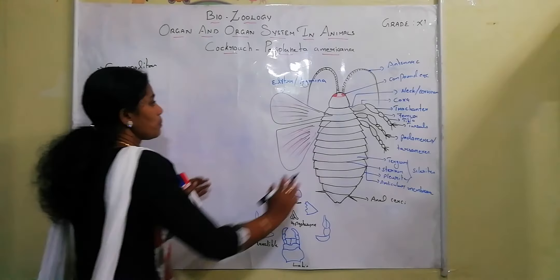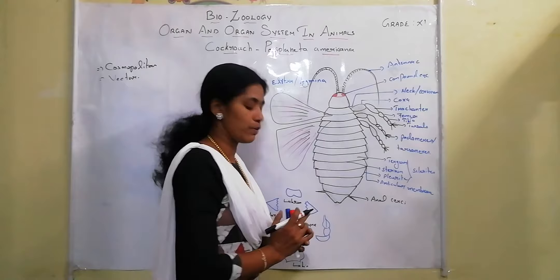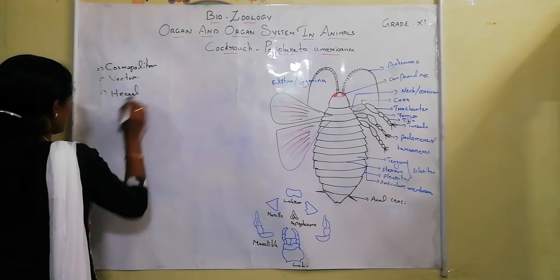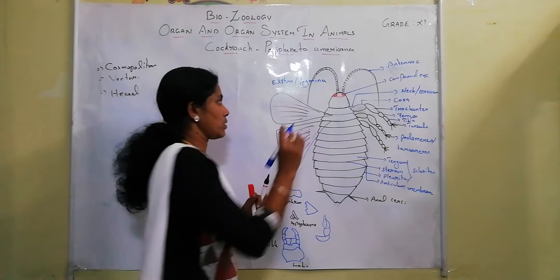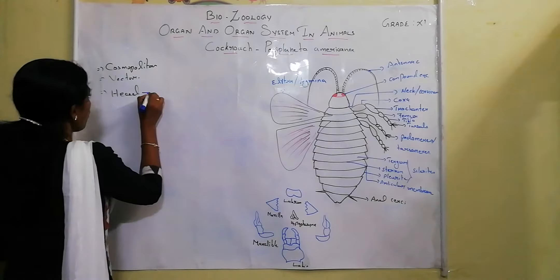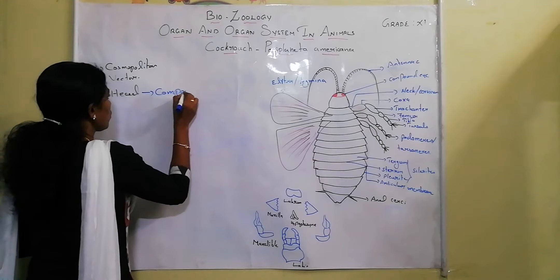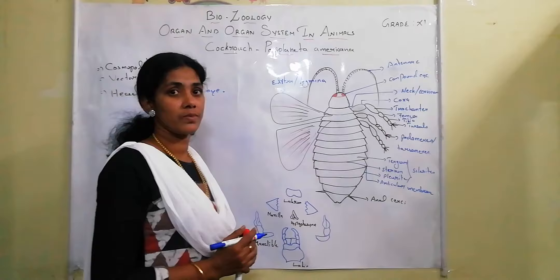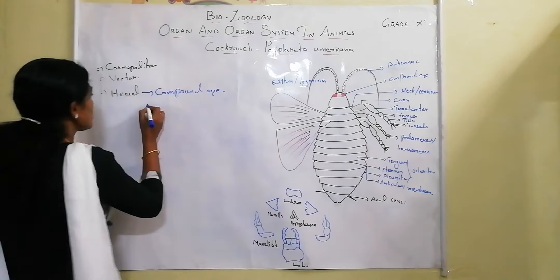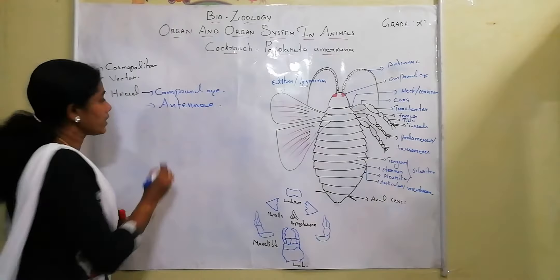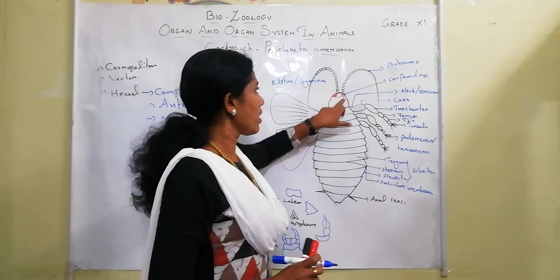The total body is divided into three divisions. The first division is the head. The head consists of compound eyes, a pair of antennae, and the mouth, which is present in the ventral region.